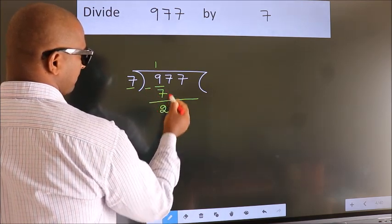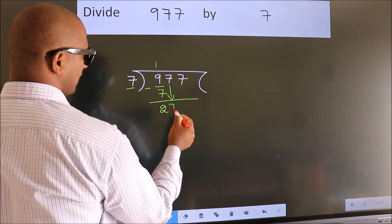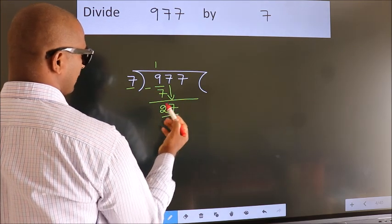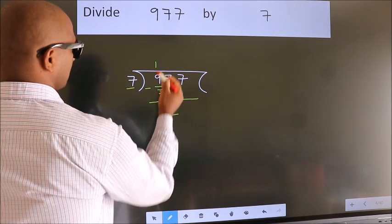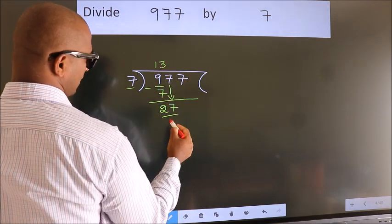After this, bring down the beside number. So 7 down. So 27. A number close to 27 in the 7 table is 7 threes, 21.